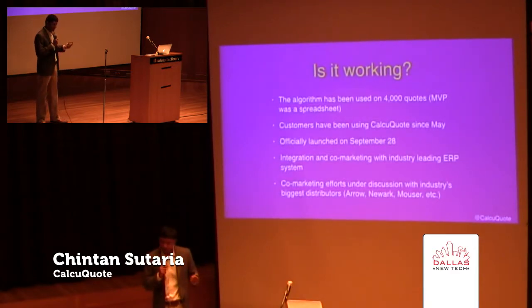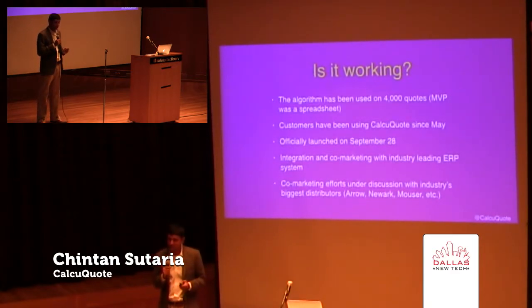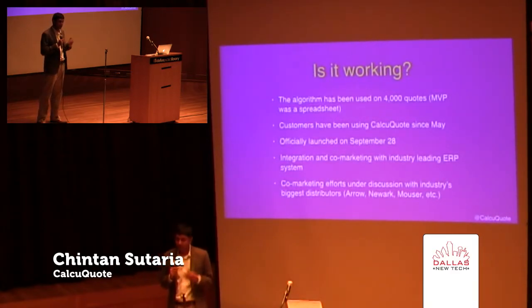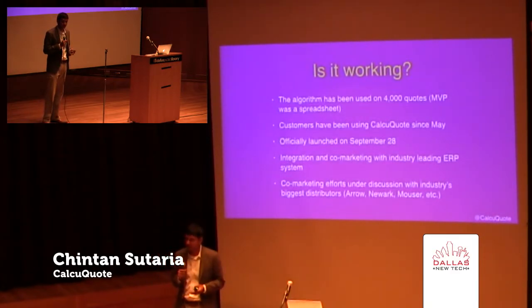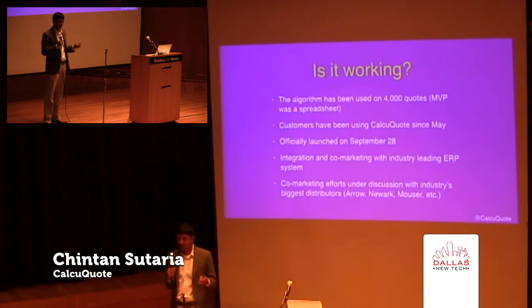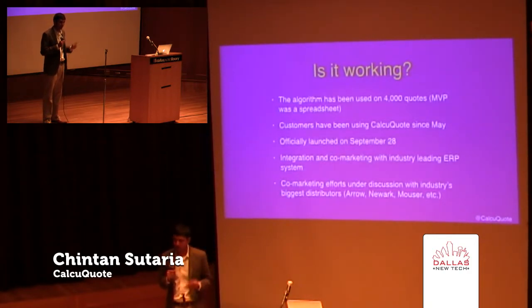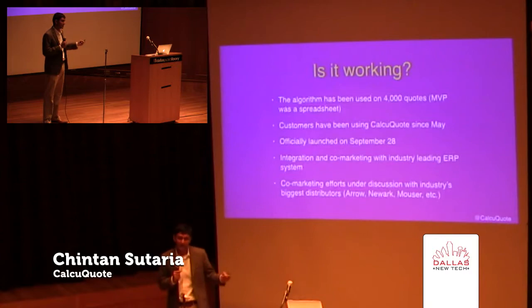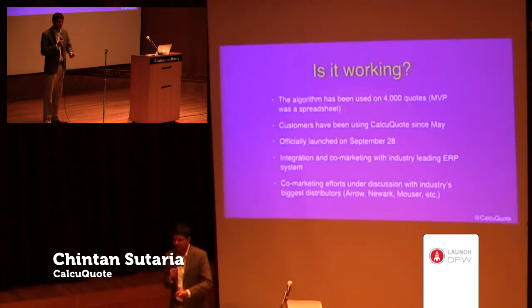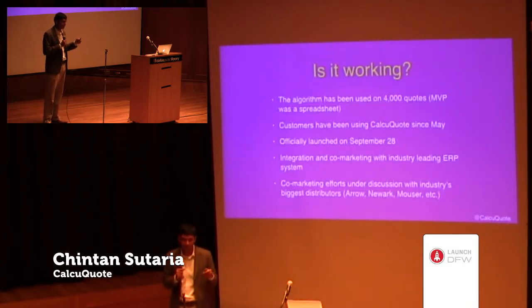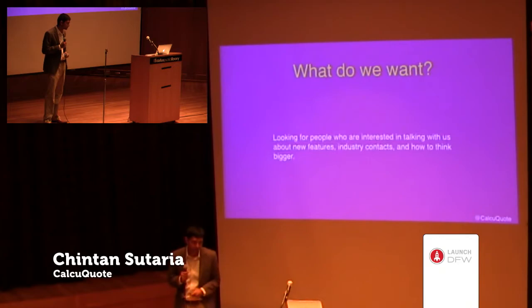We've also got co-marketing efforts underway with some of the biggest distributors in the industry. If you're in the electronics world, Mouser, Arrow, and Newark are names that mean something to you. They're starting to recommend to their customers that they should use CalcuQuote to get pricing and availability information.